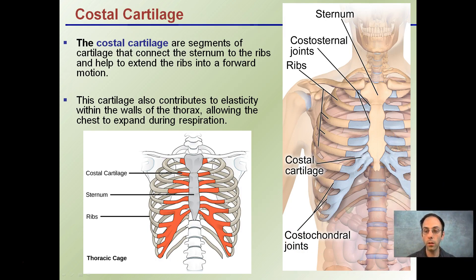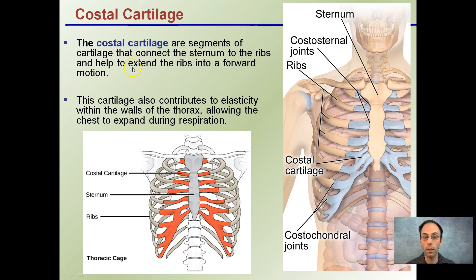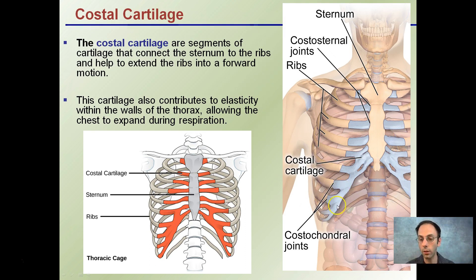The costal cartilage are segments of cartilage that connect the sternum to the ribs and help extend the ribs into the forward motion. This cartilage also contributes to the elasticity within the walls of the thorax, allowing the chest to expand and compress during respiration. What we see here are floating ribs in the back and our false ribs joining and attaching their cartilage to the sternum. Our true ribs are the ones directly attaching to the sternum.